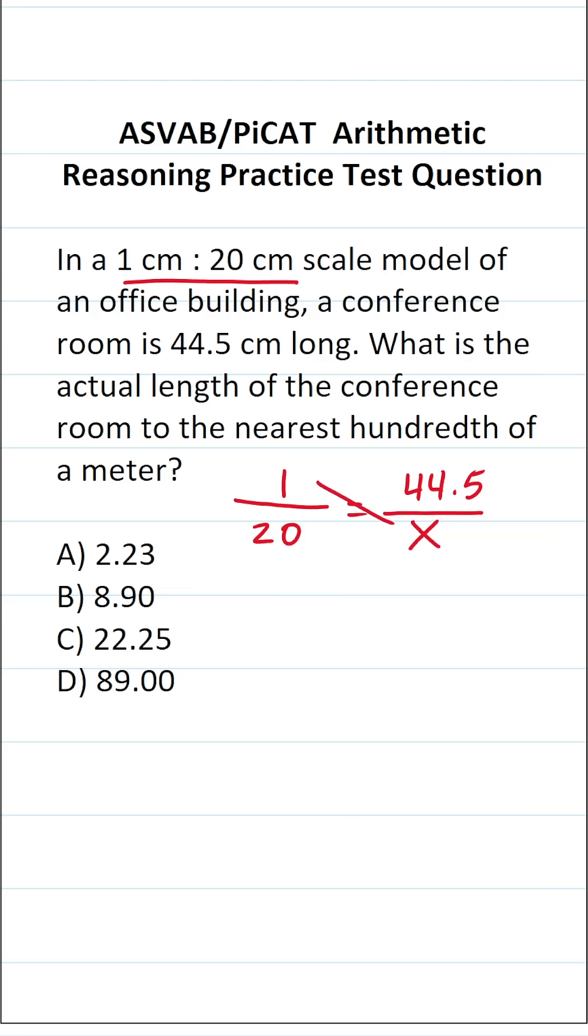You solve proportions via cross-multiplication. 1 times X is X. This is equal to 20 times 44.5. I'm going to have to work this off to the side because we have a decimal here. So this is 44.5 times 20. We have to move the decimal in 44.5 one time to the right, such that this becomes 445 times 20, albeit with one decimal to move back to the left when we're done.